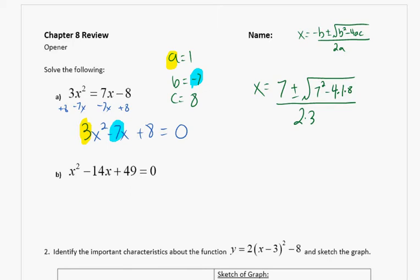A should be 3, right? So I've got to fix this then. 4 times 3 times 8. Does that look right? Yeah. Okay.